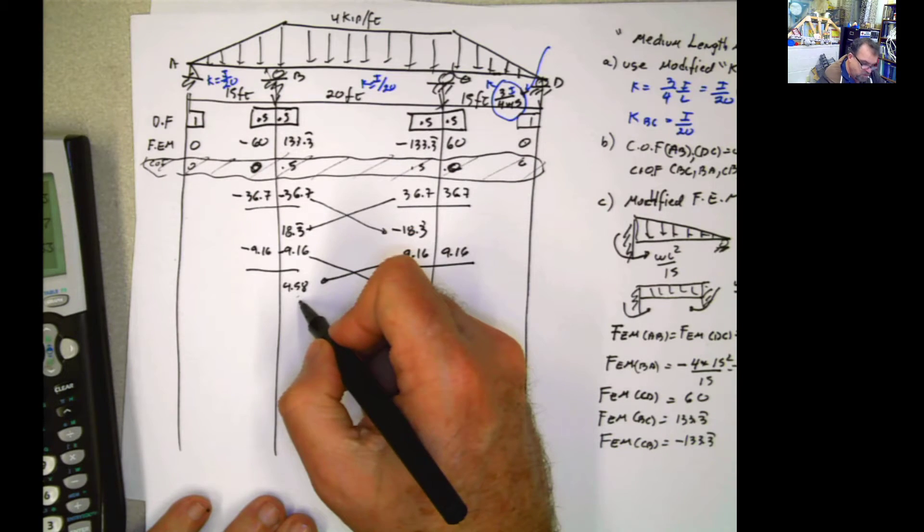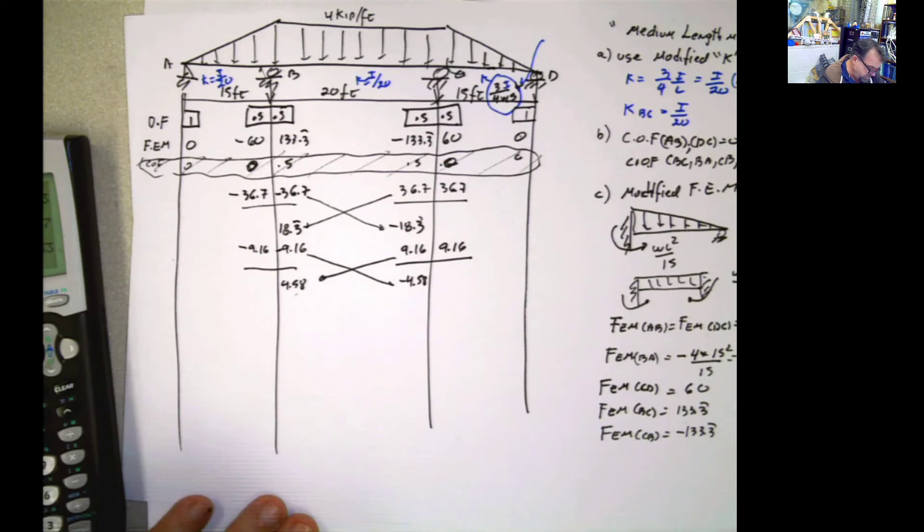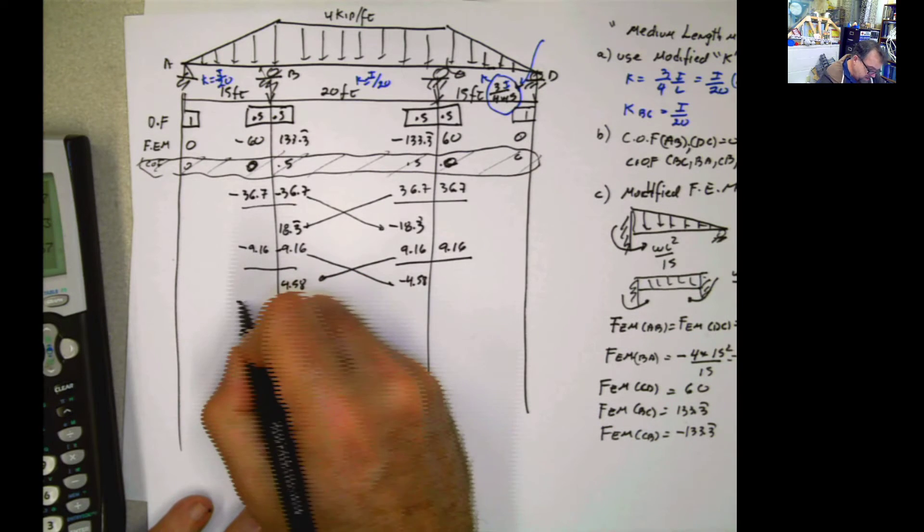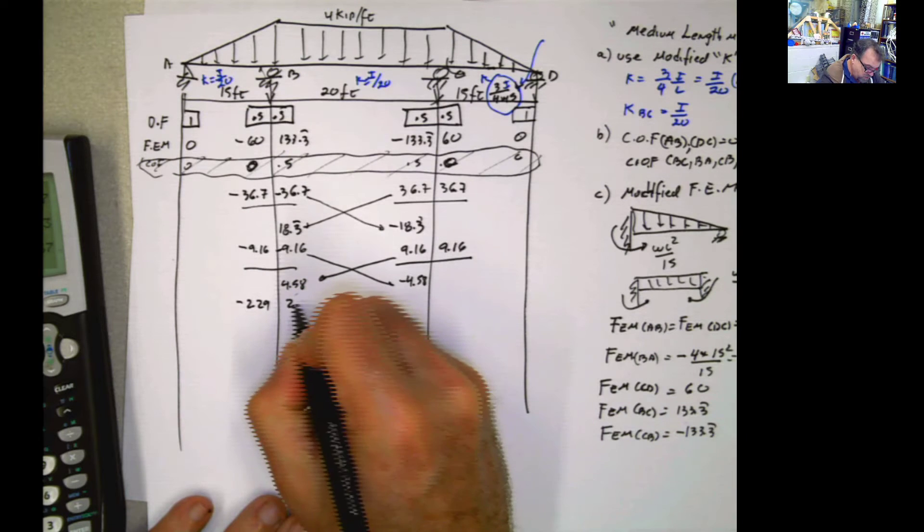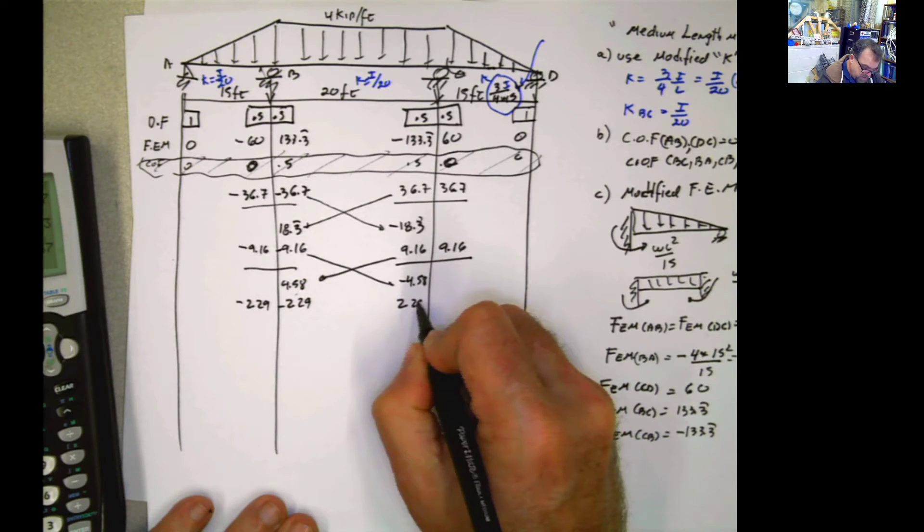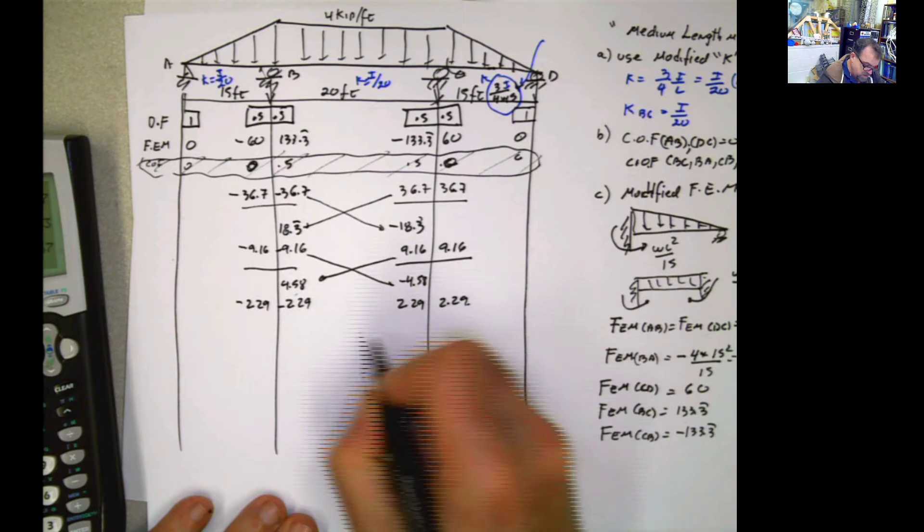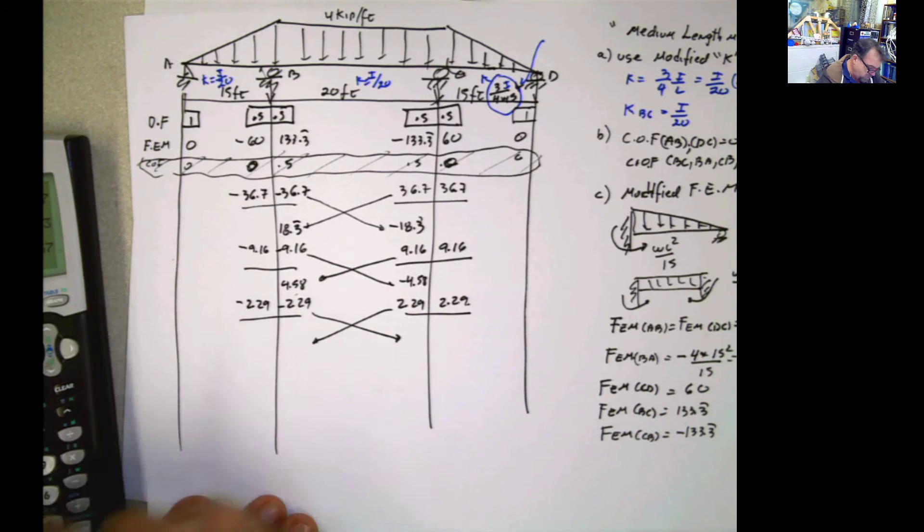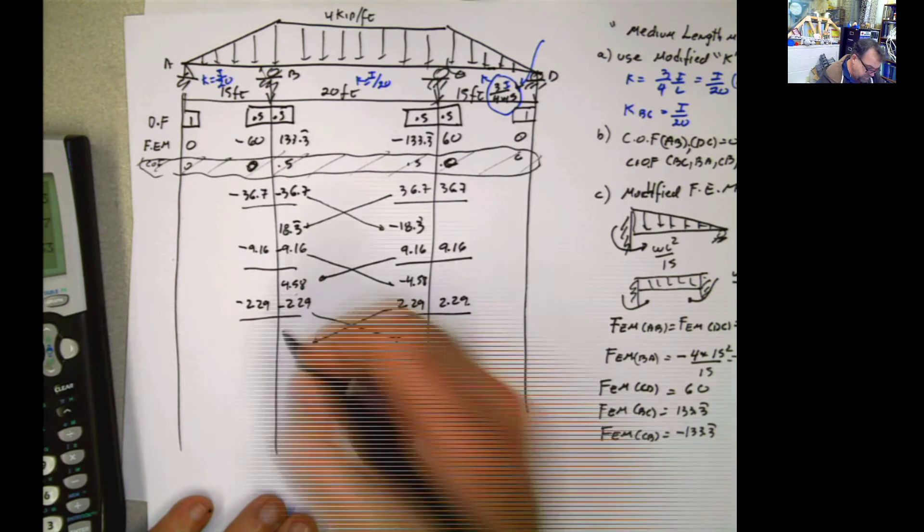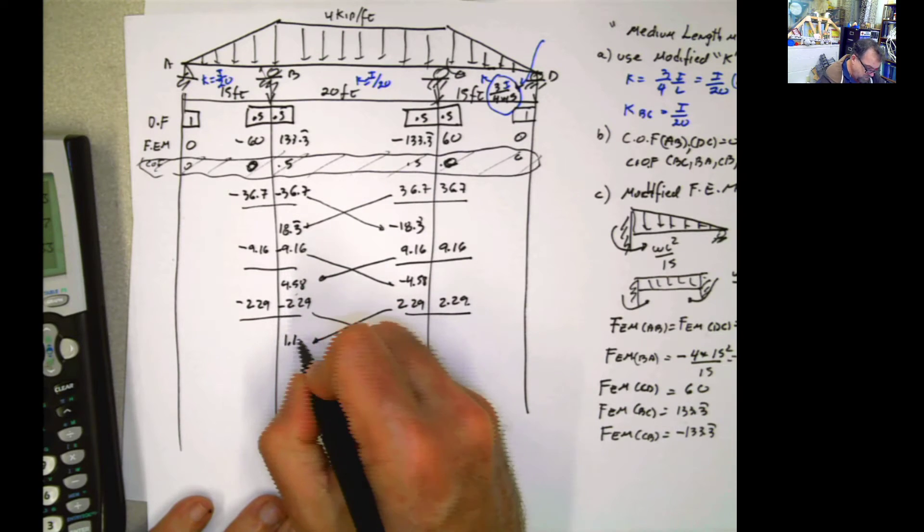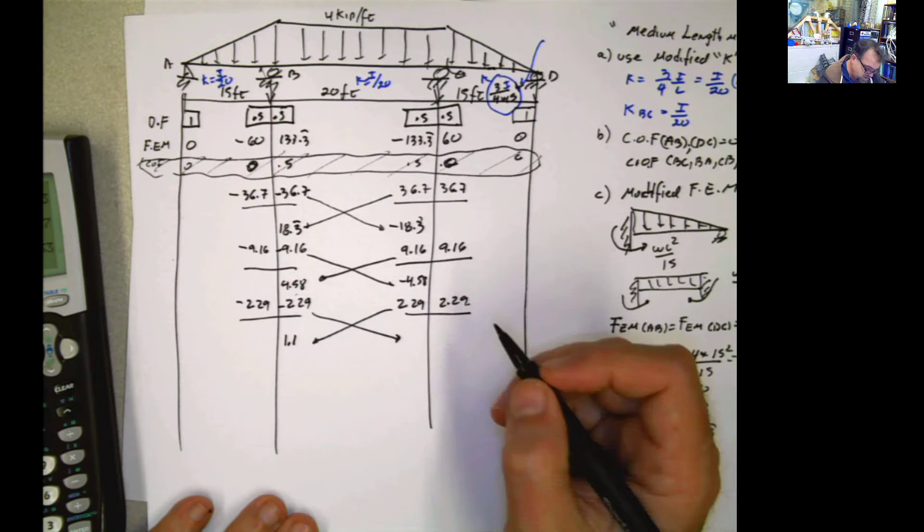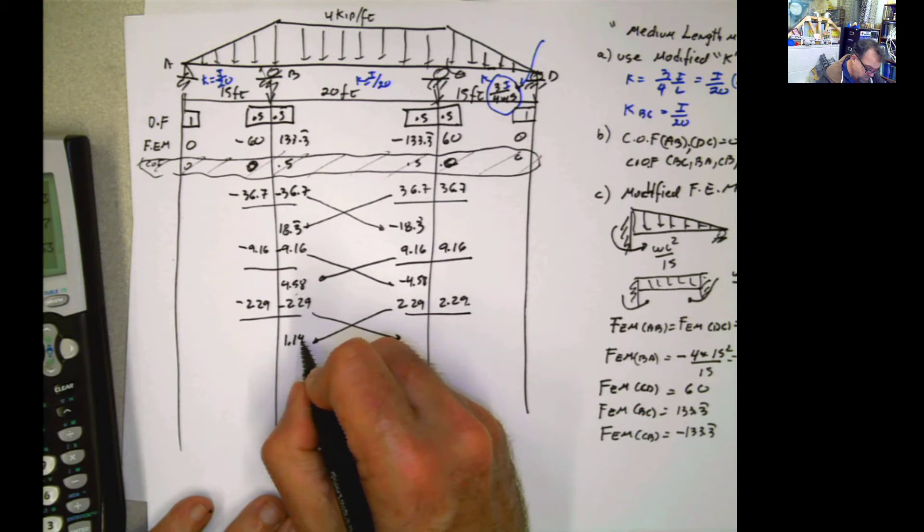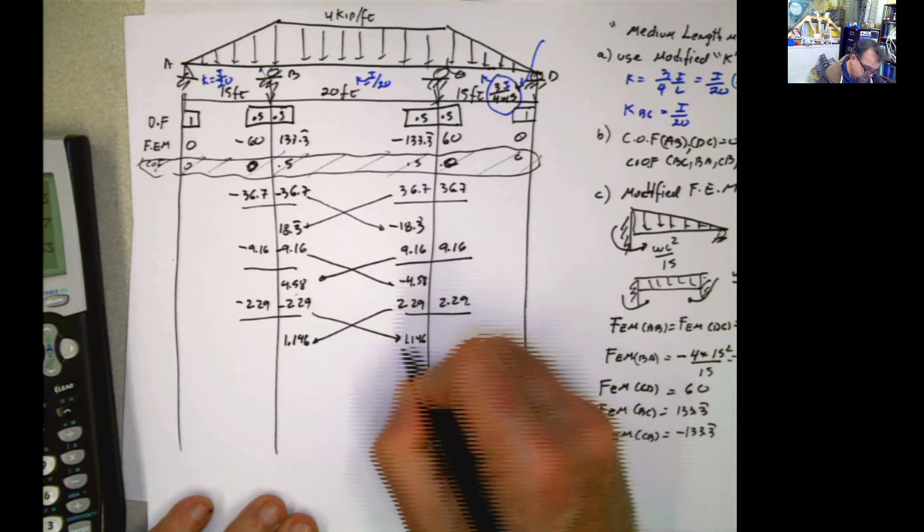I need negative 4.58, multiplied by 0.5, multiplied by 0.5, 2.29, negative 2.29, 2.29 negative, 2.29 positive. Log, log, transfer, transfer, divided by 2. Negative, this is going to be 1.146. Let's say 1.146, 1.146 negative.